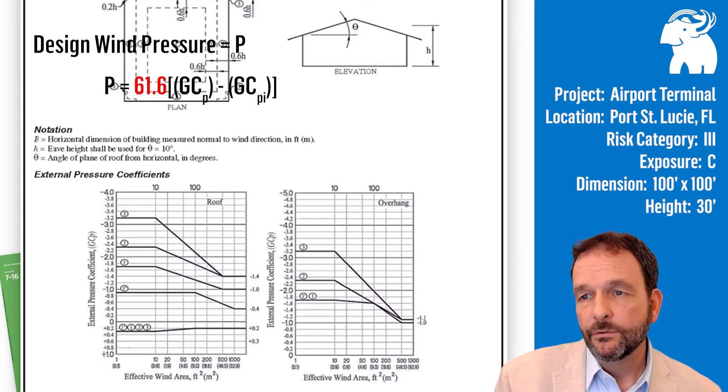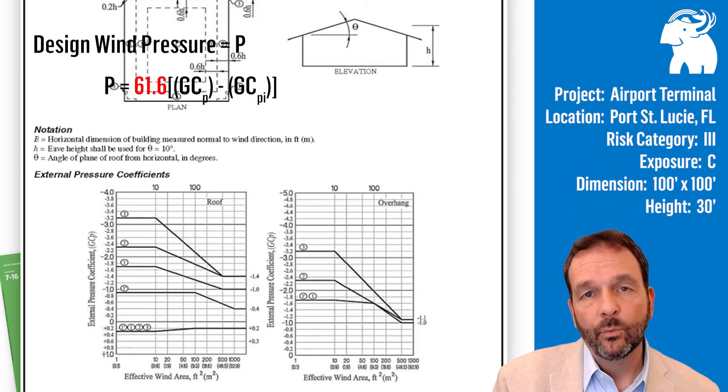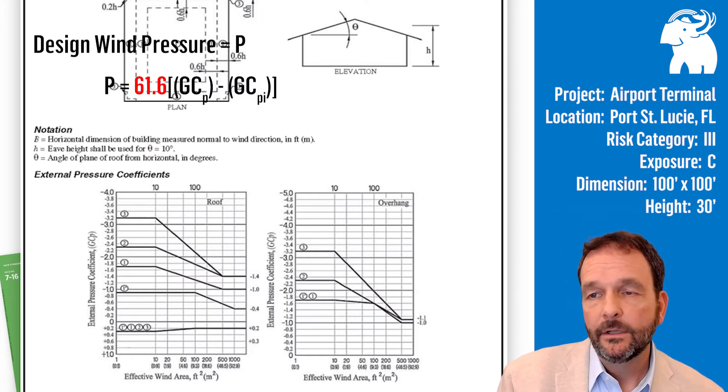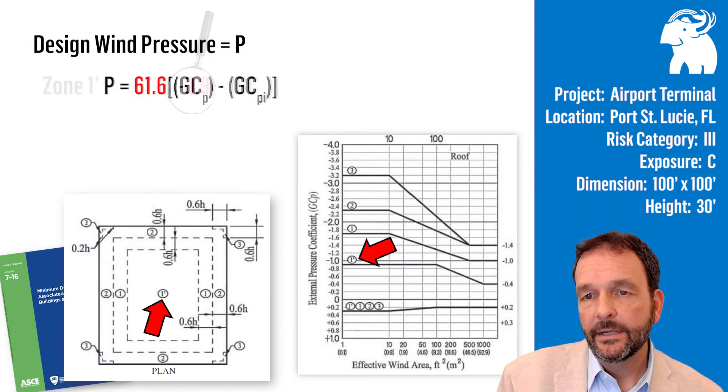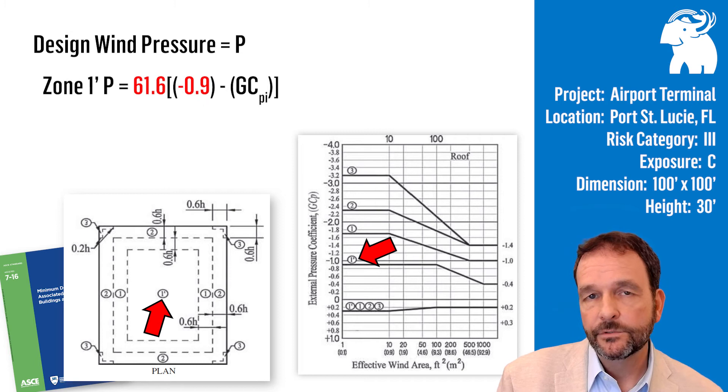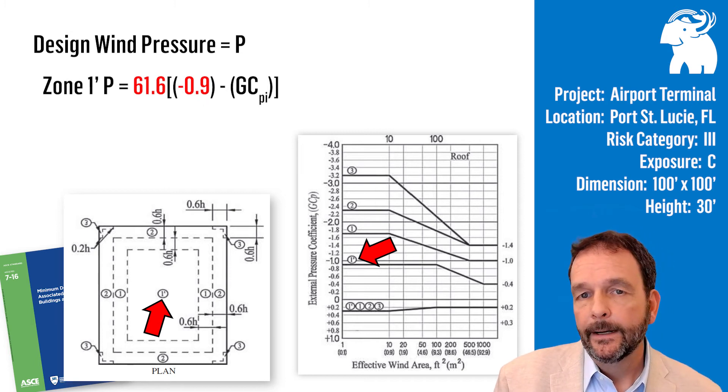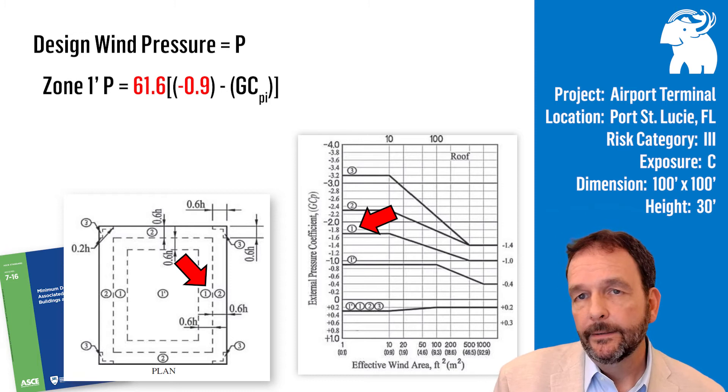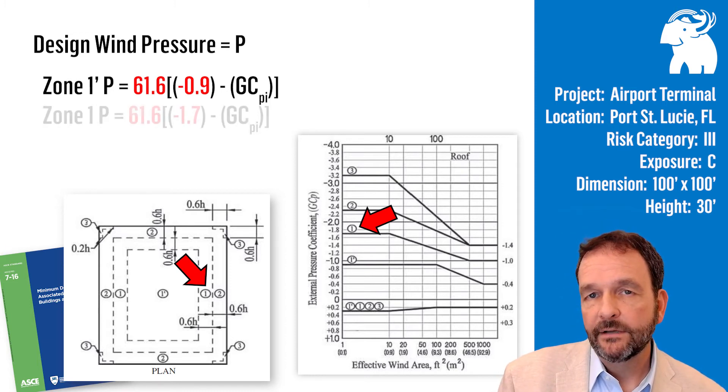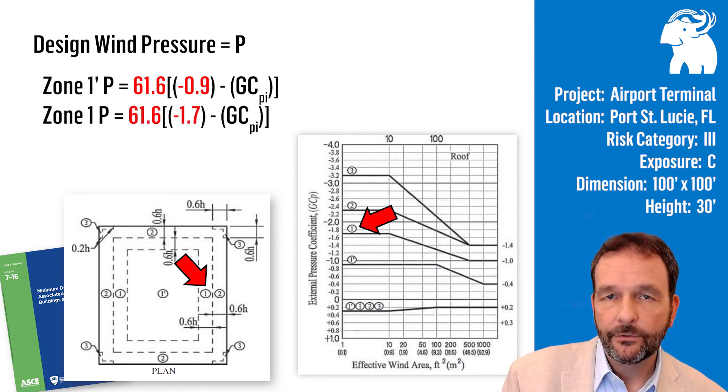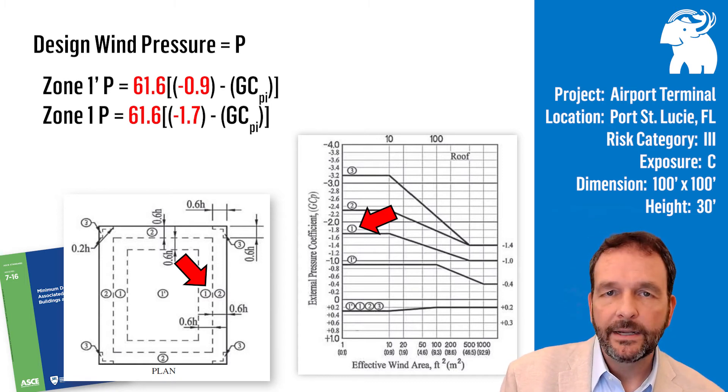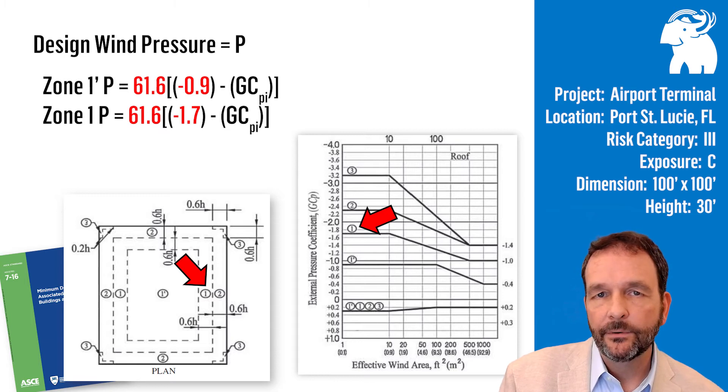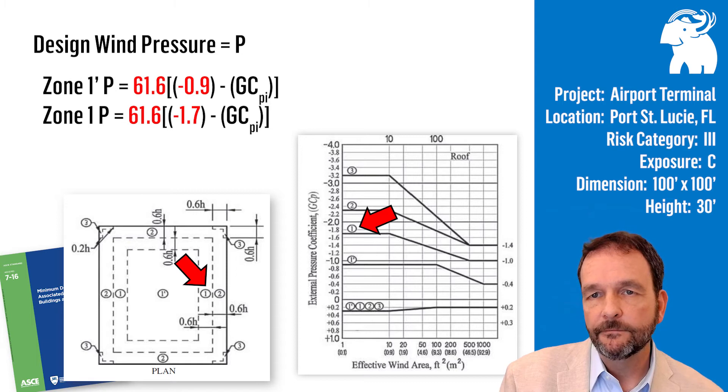We use this to find first zone 1 prime. For roofing, our zone 1 prime is negative 0.9 towards the field of the roof, the internal center. Zone 1 is negative 1.7, a little higher as we get near the perimeter. The size of this zone is 0.6 times the roof height. In our case, we have a 30 foot high building, 0.6 times 30 equals 18 foot. So our width is 18 foot.